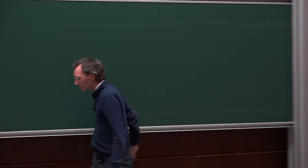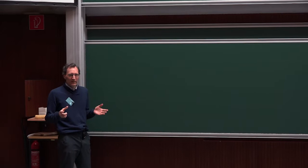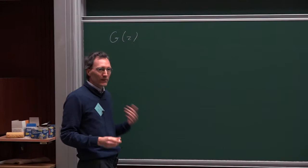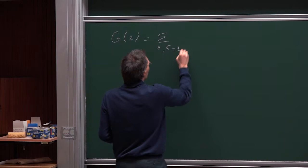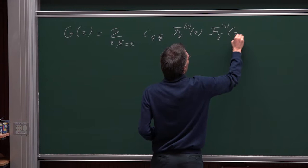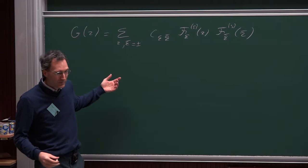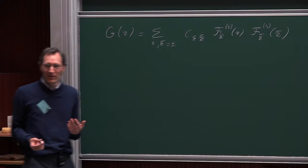The four-point function is a linear combination of such blocks. In general, with left-moving and right-moving blocks, the combination could involve four terms: a sum over ε and ε̄ of coefficients C_{ε,ε̄} times F_ε(z) · F_{ε̄}(z̄). However, we don't just want any solution — we want single-valued solutions.